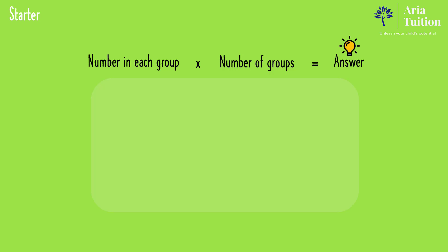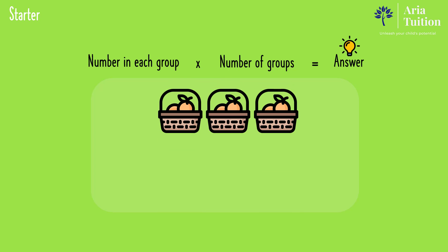For example, how many oranges are there? Each basket or group has two oranges, therefore the number in each group is two oranges.